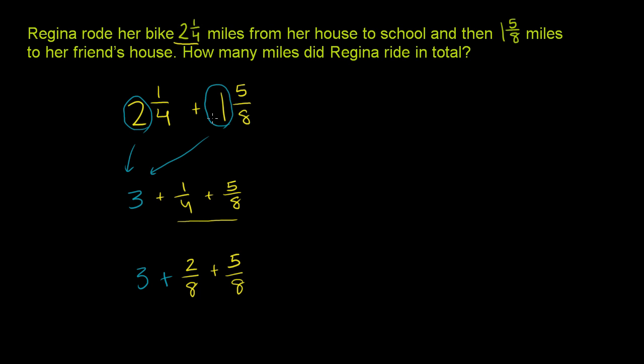So 2 and 1/4 plus 1 and 5/8 is the same thing as this right here. And this is equal to, we have our 3, and then over 8, we add the 2 plus 5. We have 7/8. So this is going to be equal to 3 and 7/8 miles. She rode a total of 3 and 7/8 miles.